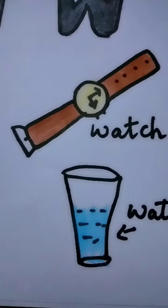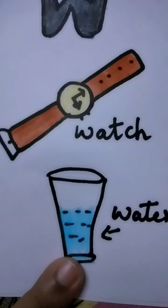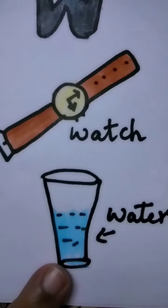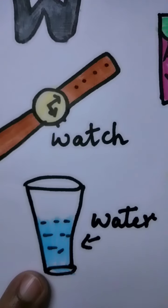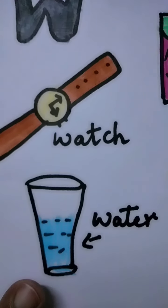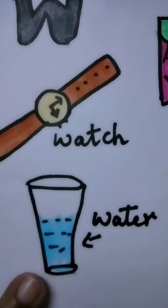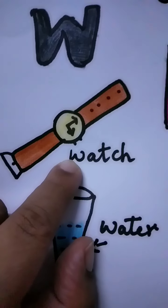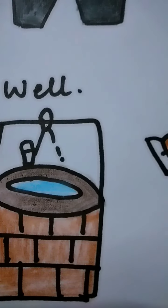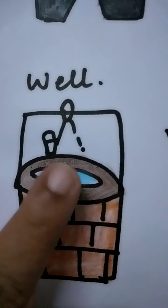What do you drink in a glass? You drink water — pani. Some people drink milk also. Strong children drink milk in a glass, but big people drink water. And what is this? Watch. Then what is this? Well. This is a well — well means kuwa. In some villages where they don't have taps, they go to the well and draw out water.